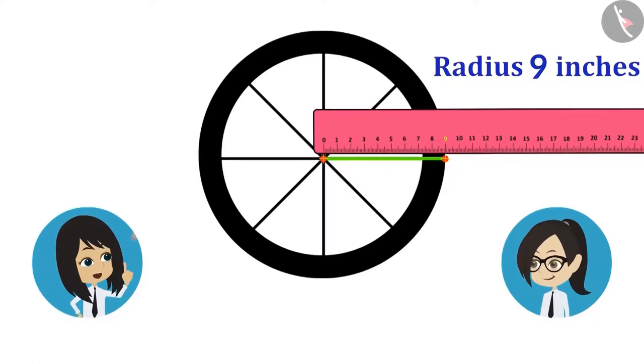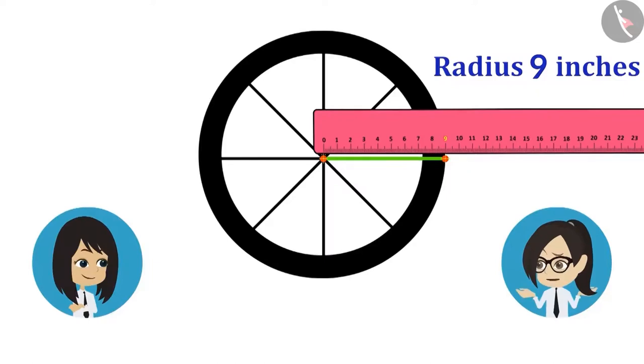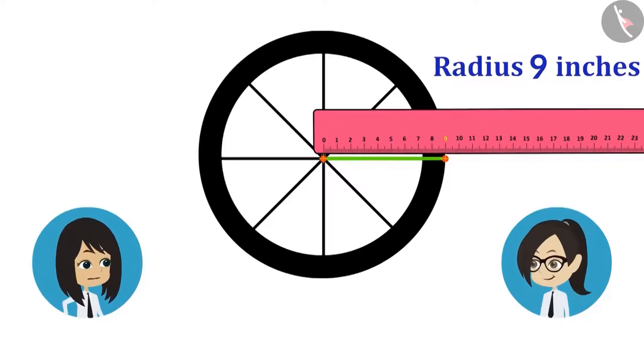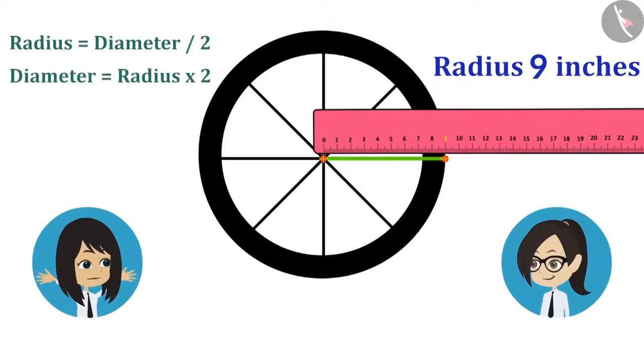Why do we need to measure it? We can find it only by measuring the radius. The radius is also called the half of diameter. This means that the diameter will be twice the radius.